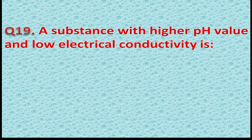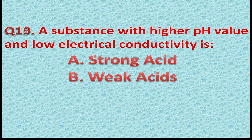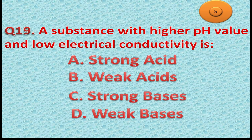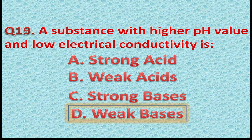Question 19: A substance with higher pH value and low electrical conductivity is — Option A: Strong acid. Option B: Weak acid. Option C: Strong base. Option D: Weak base. The correct answer is Option D — Weak base. You got one point for this correct answer.